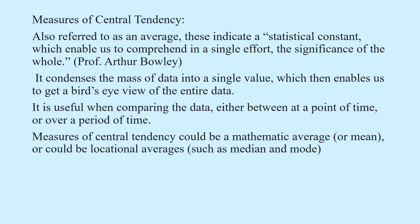Measures of Central Tendency: Also referred to as an average, these indicate a statistical constant which enables us to comprehend in a single effort the significance of the whole. It condenses the mass of data into a single value which then enables us to get a bird's eye view of the entire data. It is useful when comparing the data either between a point of time or over a period of time. Measures of central tendency could be a mathematical average or mean, or could be locational averages such as median and mode.